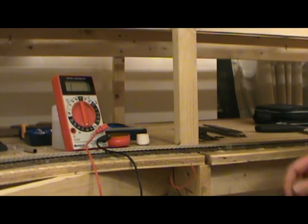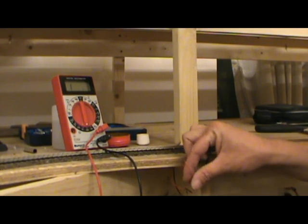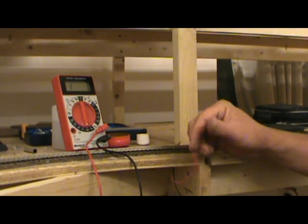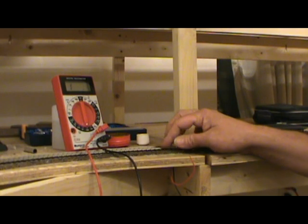Well, after putting down the track feeders, you want to check continuity or the resistance between your wire that you've connected and to the rail itself.